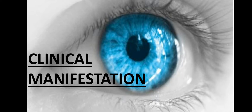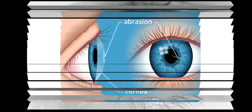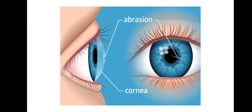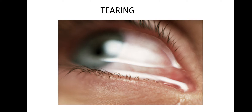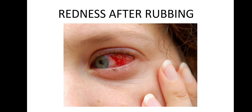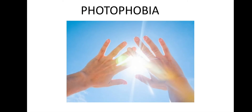Next, we can see the clinical manifestations of corneal abrasions. First, there is severe pain. Second is tearing — as a defense mechanism you can see clear tears from the eye. Third is redness — after rubbing, the eye becomes red. Fourth is photophobia.